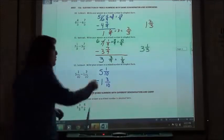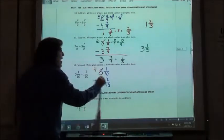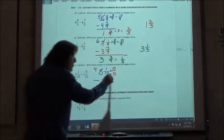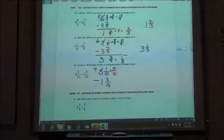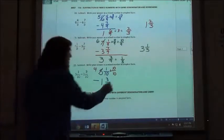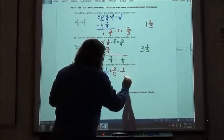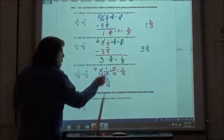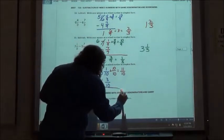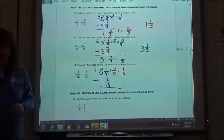Here, when I borrow one from my five, I have to add ten tenths because that's the unit I'm working with. So one tenth plus ten tenths is eleven tenths.